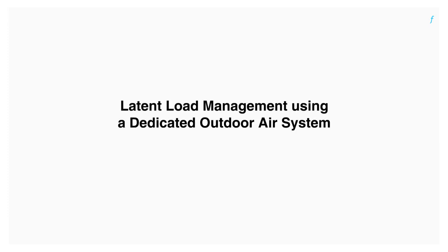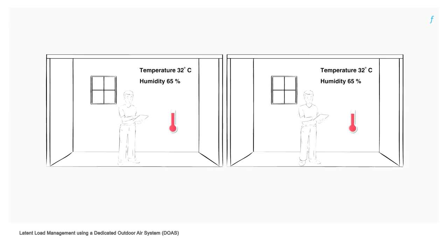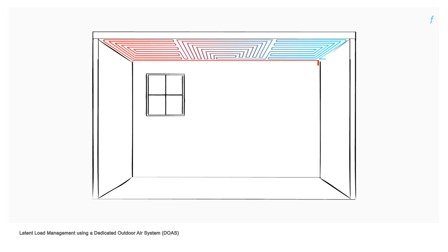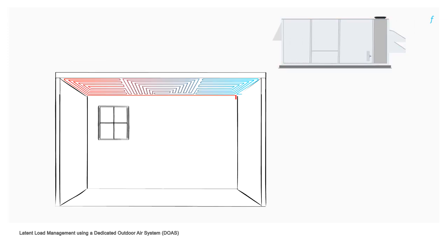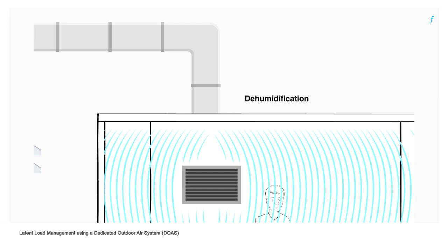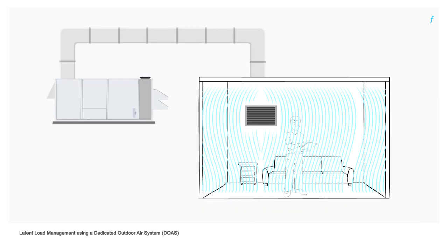Latent heat load management using a dedicated outdoor air system: Comfort is as much about humidity as it is about heat. While radiant panels take care of the heat in the air, a dedicated outdoor air system is essential to handle humidity in the space. Along with dehumidification, the dedicated outdoor air system accomplishes ventilation and filtration. The air quantity requirement in this system is much lesser when compared to a typical air-based cooling system.